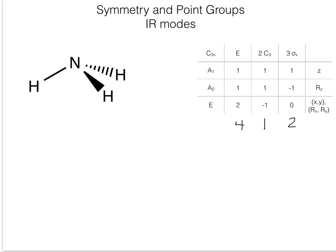We also need to write down the contribution per atom for each operation. For the identity operation, the contribution per atom is three. For the C3 operation, the contribution per atom is zero. For the Sigma or reflection plane operation, the contribution per atom is one.